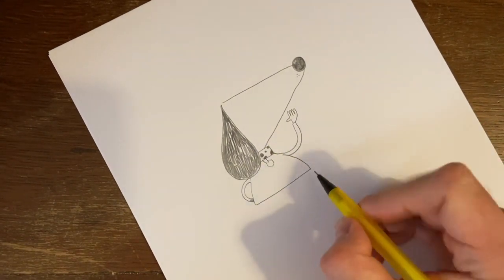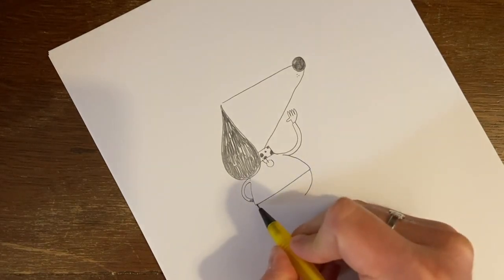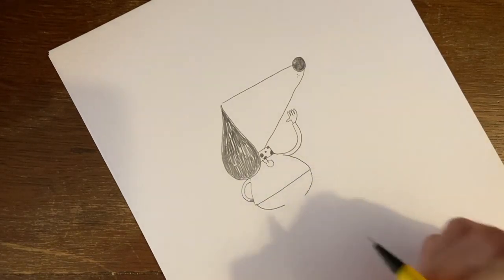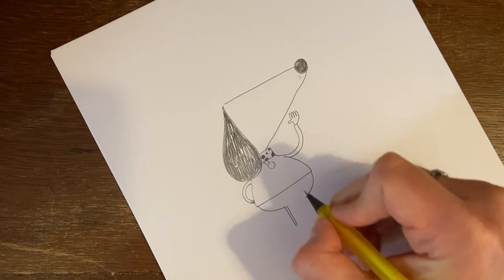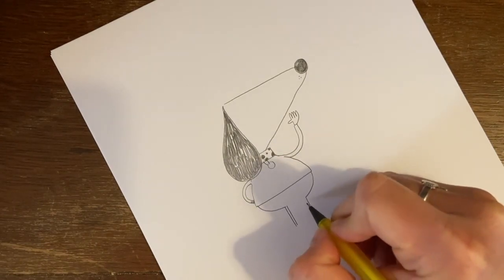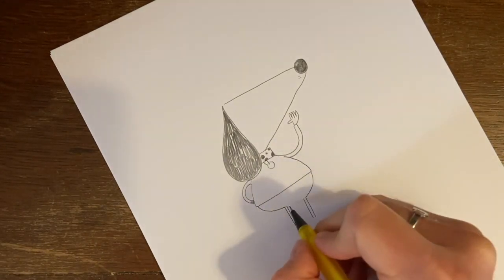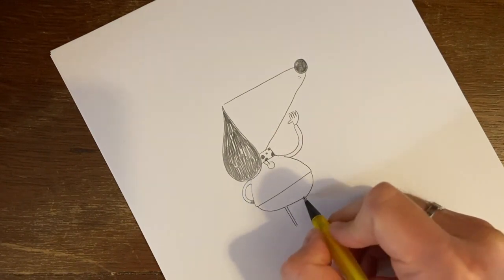Now we're going to draw his tummy. So we draw a nice curved shape there and one there for his bum. And then his legs are just a number 11 over this side, like that, and a number 11 over this side. And we join them up in the middle like that.